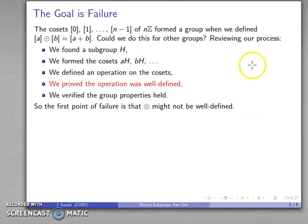And I can always define coset multiplication that way so that doesn't seem like that's going to cause us to crash. And after that we proved the operation was well-defined, and this is where we might run into a point of failure.